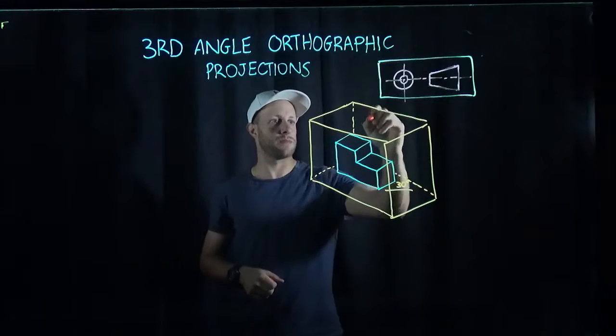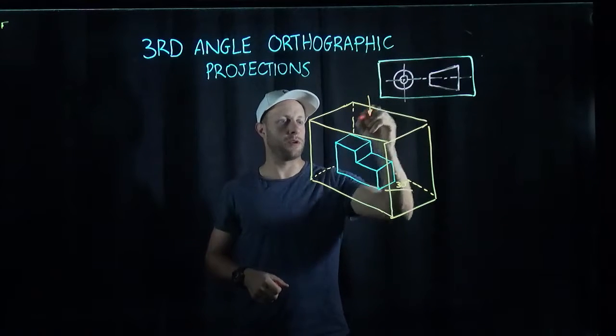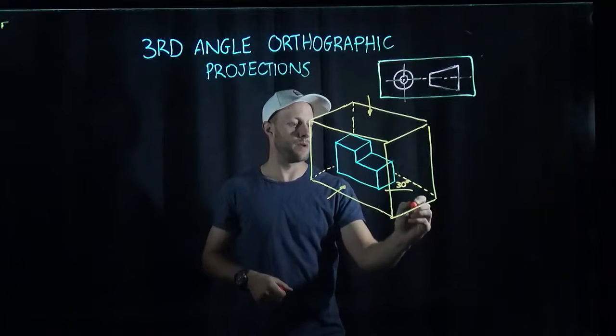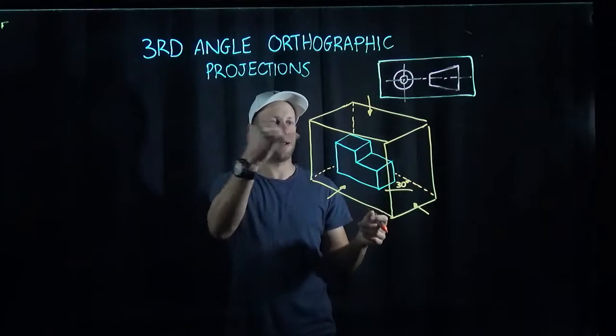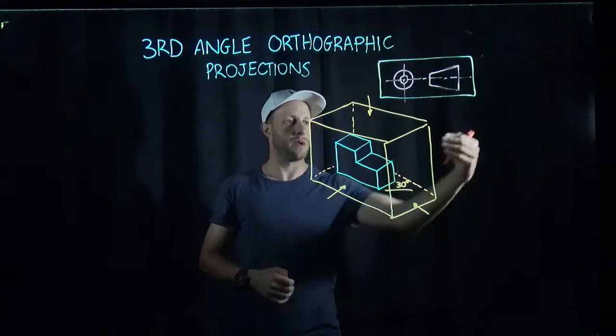Now you've got a top of your cube, a front of your cube, a right side, a left side, a bottom, and a back.